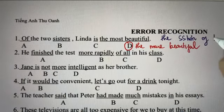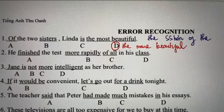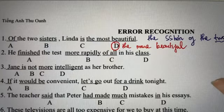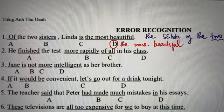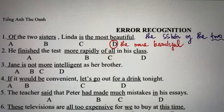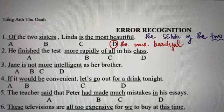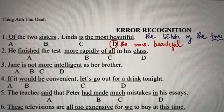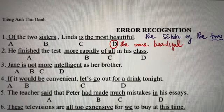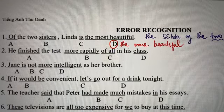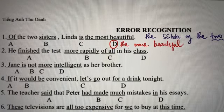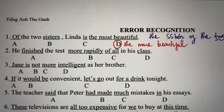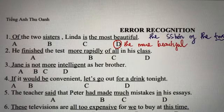Công thức: 'the + so sánh hơn + of the two + danh từ số nhiều'. Khi có 2 đối tượng, chúng ta chỉ dùng so sánh hơn kém thôi. Còn đối với từ 3 đối tượng trở lên thì chúng ta mới được dùng dạng so sánh nhất. Lưu ý nhé các bạn. Đó là câu 1.